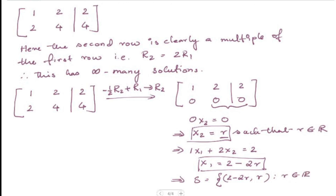The solution set is: x1 equals 2 minus 2r, and x2 equals r, where r is an element of the real numbers. This shows that the system has infinitely many solutions, and that's the end of this section.